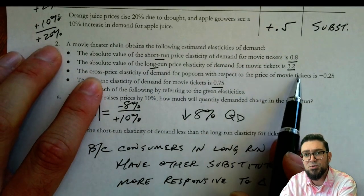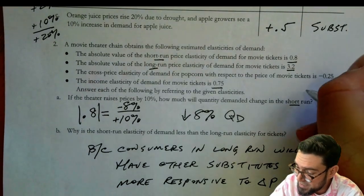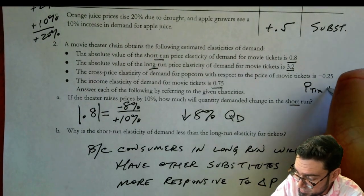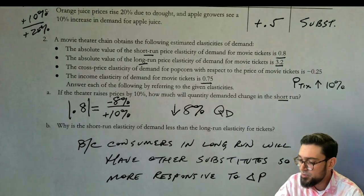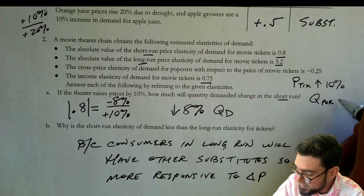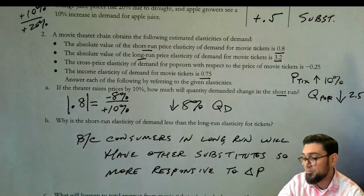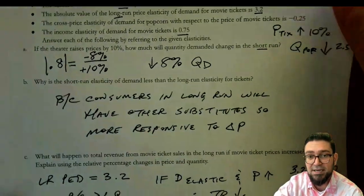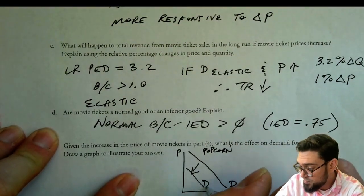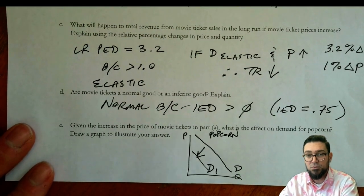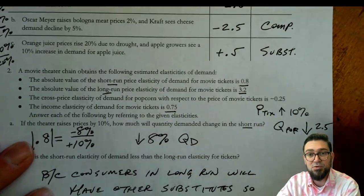Cross price elasticity with respect to movie tickets is negative 0.25. So what that means is if I raise the price of the movie tickets, price of the tickets goes up by 10%, that's what it tells me in A, that I'm going to lose quantity of popcorn. And it's going to go down by 2.5% because the only way we could get negative 0.25 is negative 2.5 over 10. So I am going to say that I am going to demand less popcorn, and so shift to the left. And so we would say the effect is that left decrease. And that's because of this negative number that we have up here.